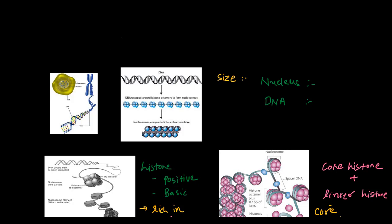The DNA that is present inside the nucleus of an organism — if we calculate the size of DNA, that is more as compared to the size of the nucleus. In mammalian cells, the size of the DNA of a diploid cell is approximately 2.2 meters, and the size of the nucleus is about 10 raised to minus 6 meters.